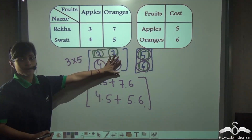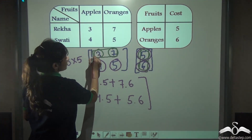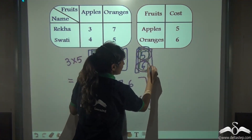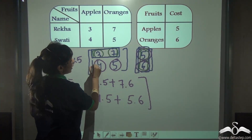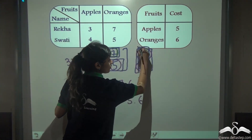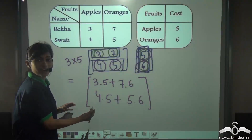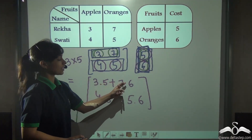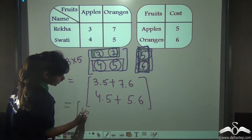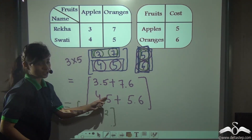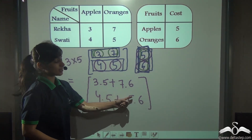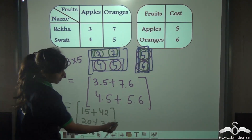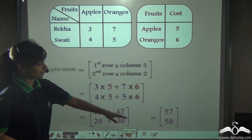And there goes your multiplication. Let us recap: first we multiplied the first row of the first matrix with the first column of the second matrix, then we multiplied the second row of the first matrix with the same column of the second matrix. Now find the answer: 3 into 5 is 15, plus 7 into 6 is 42, so 15 plus 42. And for the second row: 4 into 5 is 20, plus 5 into 6 is 30.